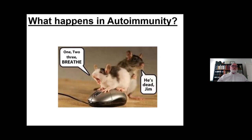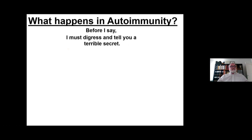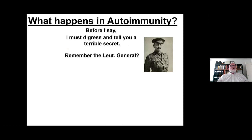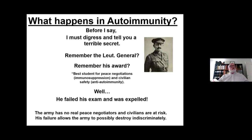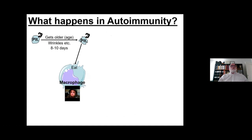So what happens in autoimmunity? Before I answer that, I must share a terrible secret. Remember the lieutenant general? His award was for best student in peace negotiations, immunosuppression, and civilian safety — anti-autoimmunity. Well, he failed his exam and was expelled from school. So the army doesn't have a real peace negotiator and the civilians are at risk. In the case of ITP, the platelets are at risk, and his failure allows the army to possibly destroy indiscriminately. We have the normal platelet senescence mechanism, but we don't know what actually stimulates the initial responses for autoimmunity. The most favored hypothesis is that there's an infection that occurs — many autoimmune diseases are associated with infection.